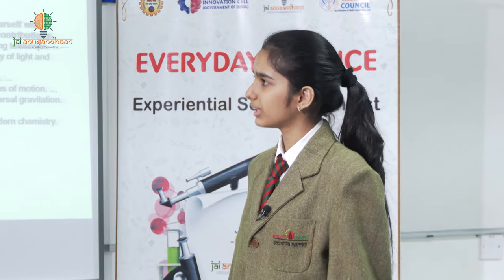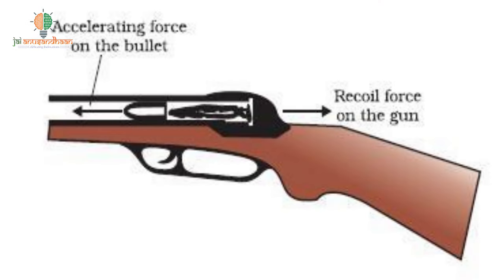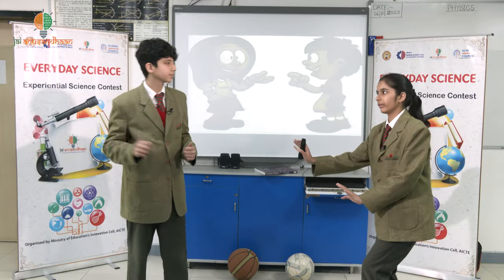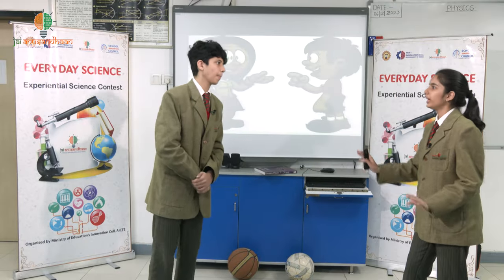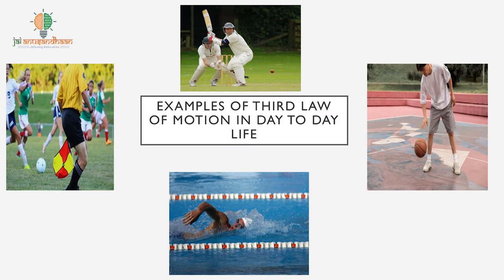Do you mind giving me some examples? Alright, fine. When a bullet is shot from a gun, the bullet puts a force on the gun which propels the gun back — wait, wait, wait. Why do all your examples include guns and bullets? Does this law only apply to them or in day-to-day life as well? No, of course, there are day-to-day examples as well.